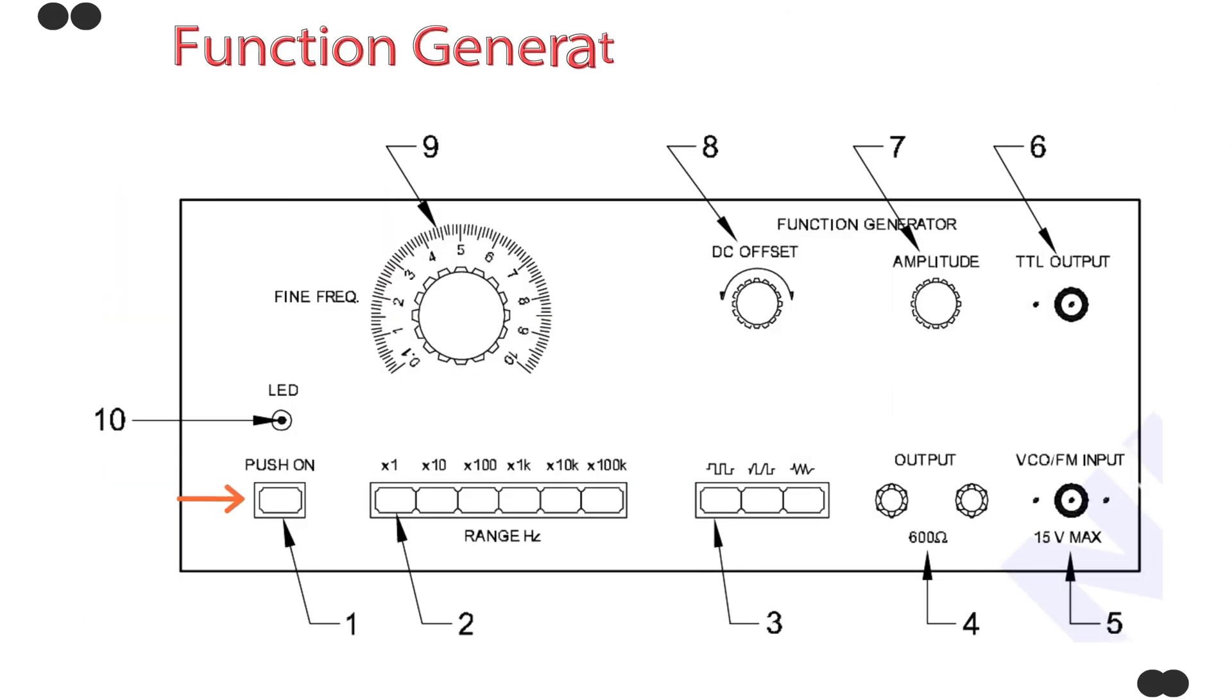Number one. Power switch. Purpose: Turns the function generator on or off. Operation: Push button switch activates the internal circuitry. Location: Bottom left corner.